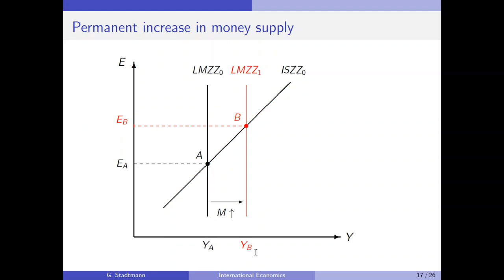The exchange rate increases, implying that the domestic currency is depreciating. As a result, exports increase and imports decrease. We call this a positive expenditure switching effect: due to the depreciation of the domestic currency, foreigners come shopping in our economy while domestic people reduce purchases abroad. So it is the case that foreigners are pulling our economy out of recession.